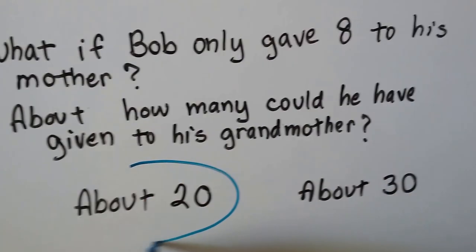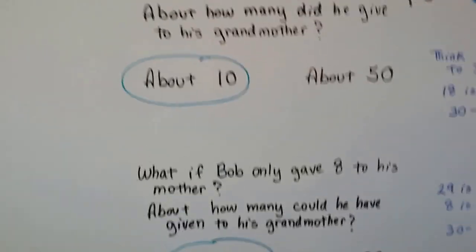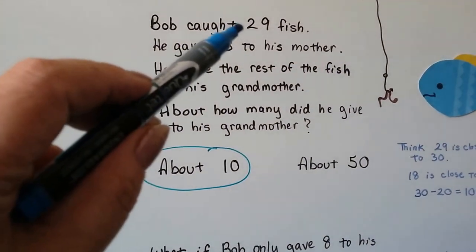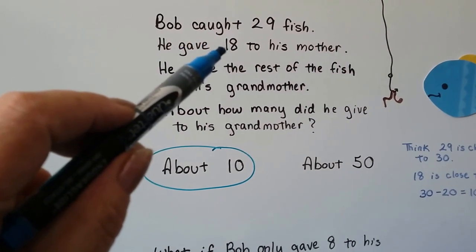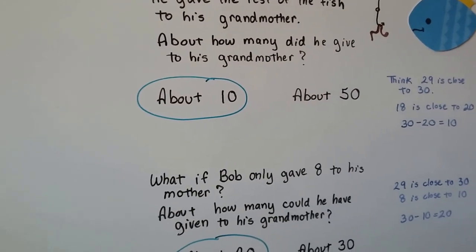He would have given about 20 to his grandmother. See? We just look for what number it's close to. 29 is close to 30. 18 is close to 20. And 8 is close to 10. And we use those to make an estimate.